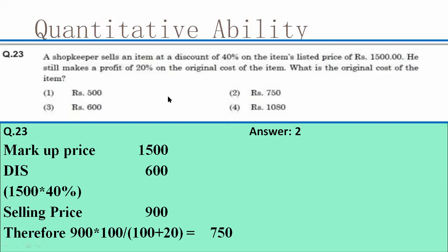Look at this simple mathematical ability question: a shopkeeper sells an item at a discount of 40%, the listed price is ₹1500, so the selling price is ₹900 (discount of ₹600). He still makes 20% profit. What is the original cost? When selling for ₹900 he makes 20% profit, so: 900 ÷ 120 × 100 = ₹750. The answer is option two.